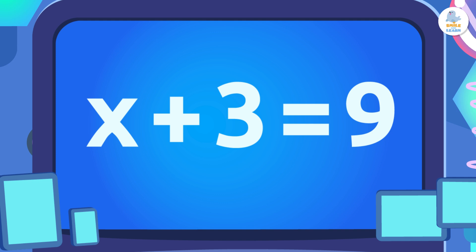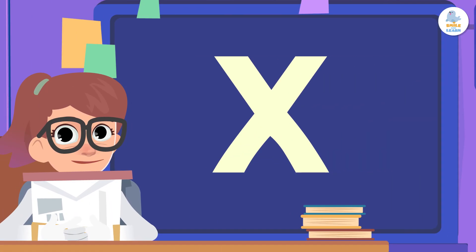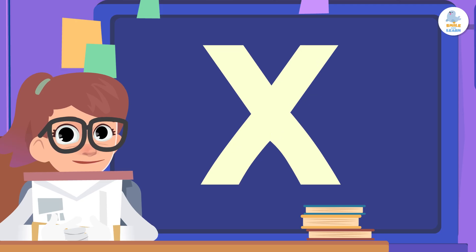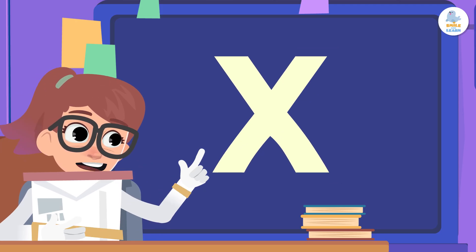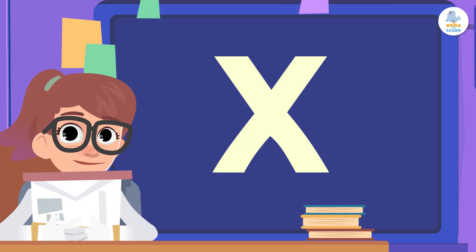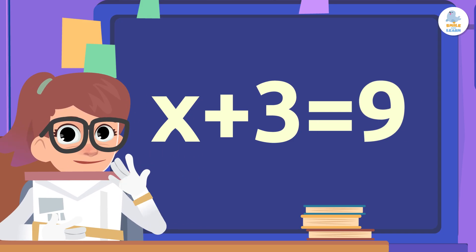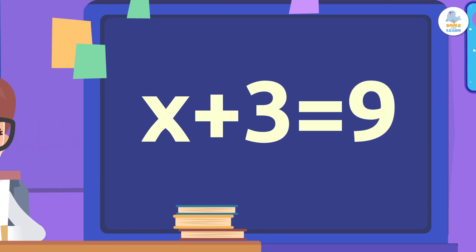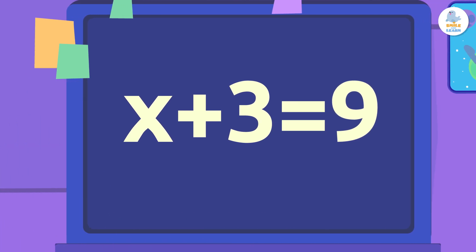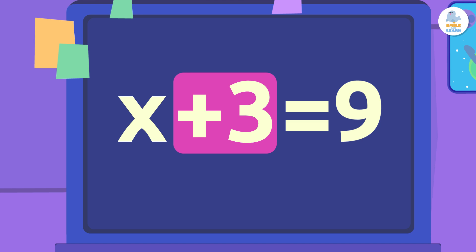Let's solve this equation! As we said before, the main goal of solving an equation is to find the value of x. We do this by isolating it on one side of the equal sign with everything else on the other. When we move parts of an equation from one side to the other, we have to keep the equation balanced. So be careful! In this equation, we are going to isolate the x on the left side, but right now that x is accompanied by an operation: plus 3.